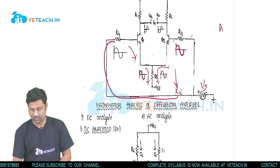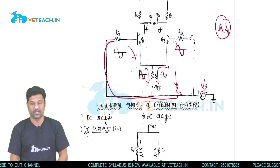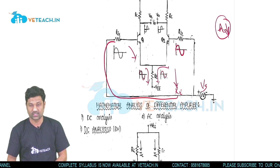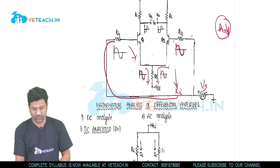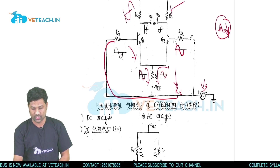This means there exists a signal flowing through RE in common mode operation, which acts as feedback. As a result of this feedback, the common mode gain Ac will be very low, since feedback decreases the gain. For the output, there is a 180-degree phase shift, so if the input is positive-negative, the output at each collector is negative-positive.